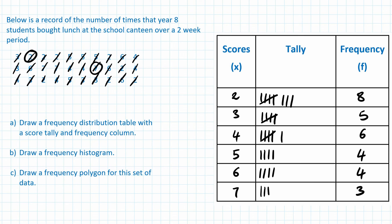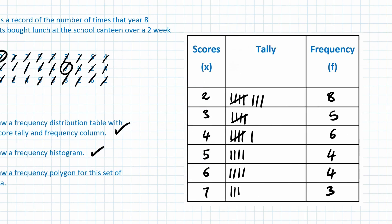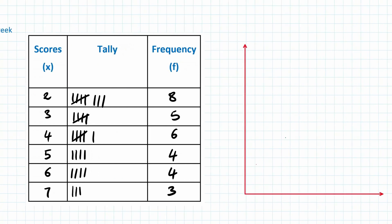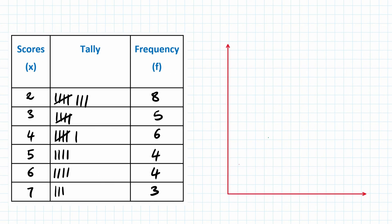We're done with the frequency distribution table. Now we need to draw a frequency histogram. The vertical axis is frequency, so I write that in here. The x-axis is score, so I write score here — or x, if you like.